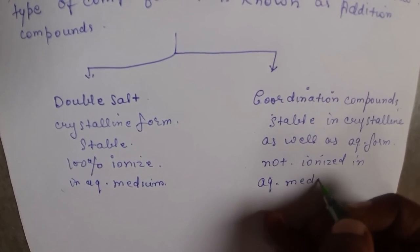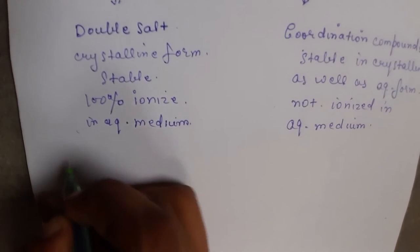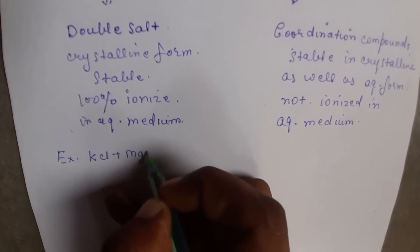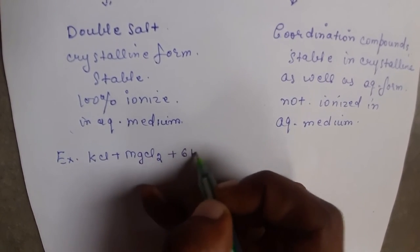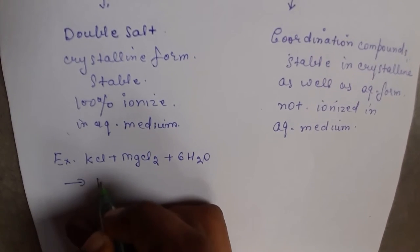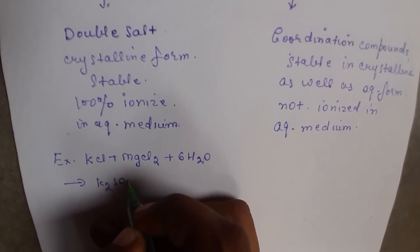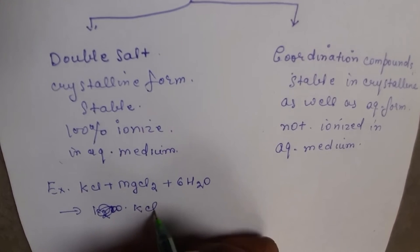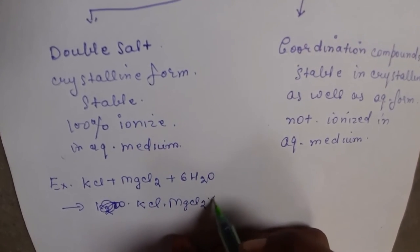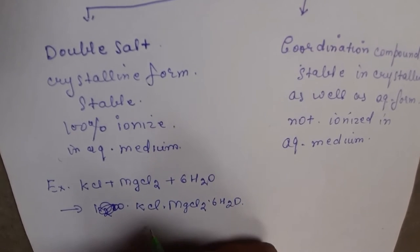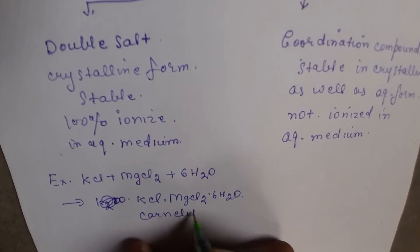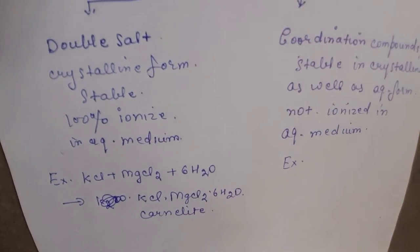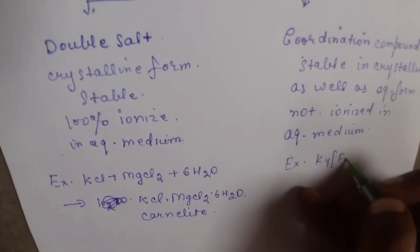Let's take a look at examples. For a double salt, we have KCl plus MgCl₂ plus 6H₂O. For a coordination compound, we use K₄[Fe(CN)₆].